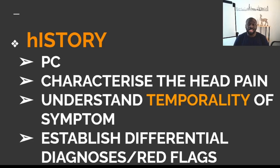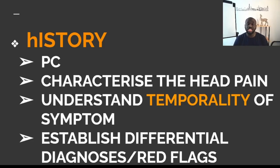You need to get more history and characterize the nature of the head pain or headache, because there are so many things that could cause head pain. You need to establish the onset, the severity, and the character of the pain — is it throbbing, sharp, shooting, or piercing? And then the timing: when does it happen? You need to establish the temporality or chronology — when did this start, how has it progressed, and how often does the patient experience the headache? You need to understand the time frame of the symptoms.